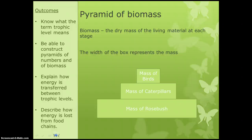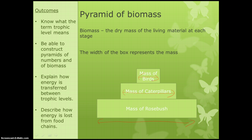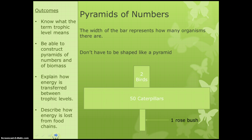Obviously this does kill the organisms in question, so it does present problems that way. But the idea is that the width of the box just shows you how much there is. So for instance, just across here, we've got lots and lots of rosebush. The mass of the caterpillars is less, and the mass of the birds is less, because as we go along there's less energy being passed along.